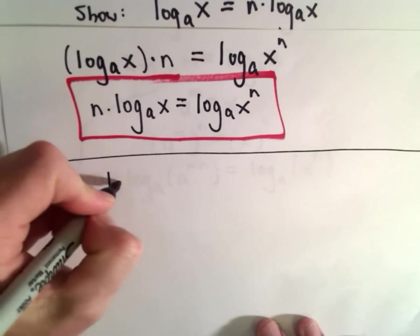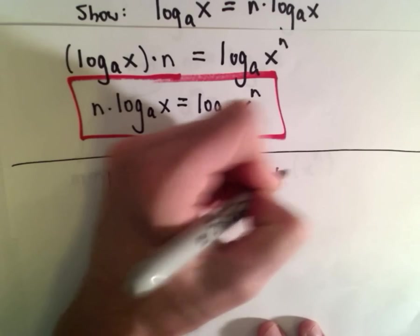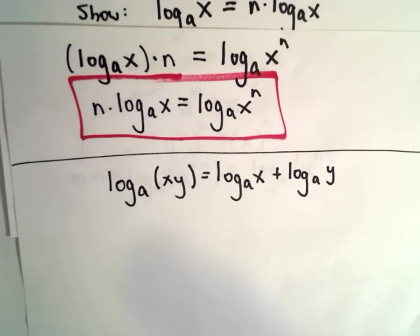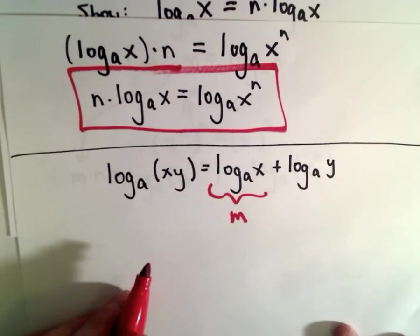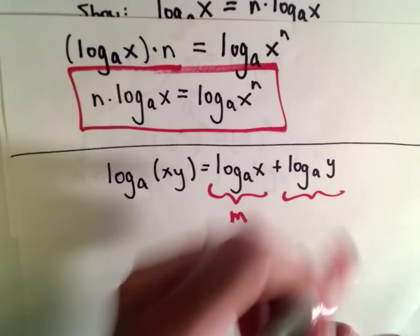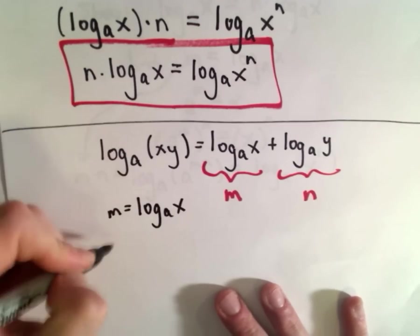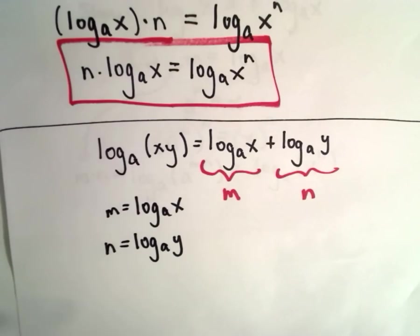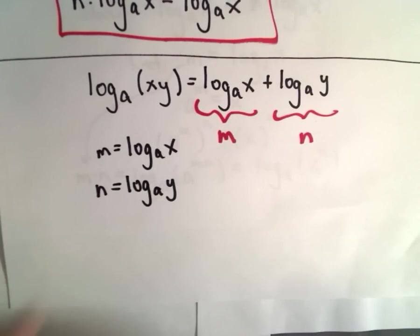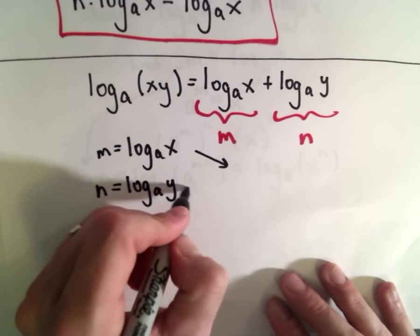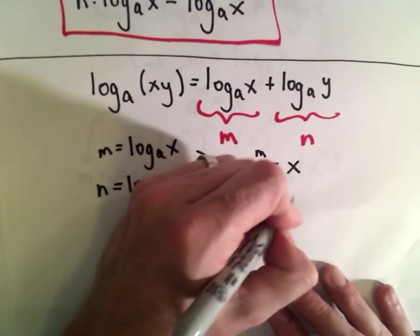Let's do the product rule next. We want to show that log base a of x times y equals log base a of x plus log base a of y. Again, I'll do a relabeling: let m equal log base a of x, and n equal log base a of y. Converting into exponential notation gives a to the power of m equals x, and a to the power of n equals y.